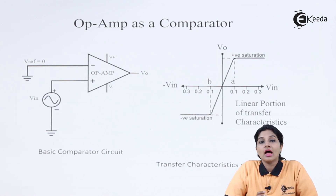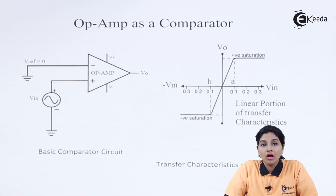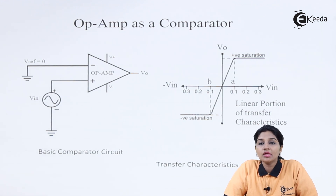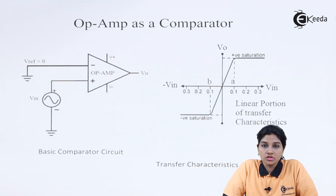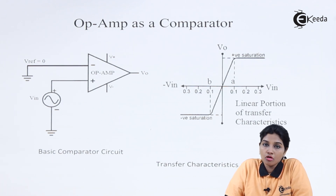Let's see what a comparator is and how an Op Amp can be used as a comparator. As its name indicates, it is basically used to compare two input signals and provides output accordingly. The comparator provides either high or low output depending upon which input is higher. To understand this, we need to consider a diagram. A comparator is a circuit used to compare signals applied at the input terminals of the Op Amp and provides output accordingly.